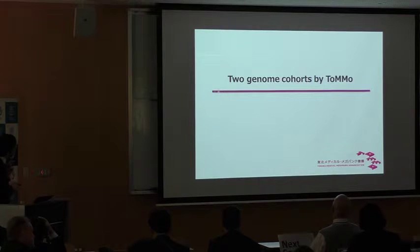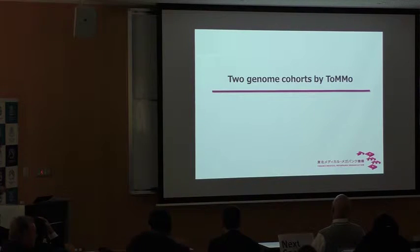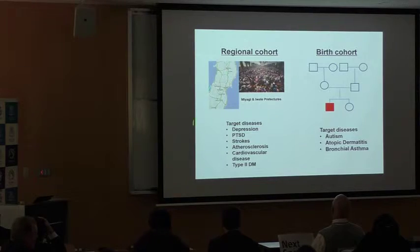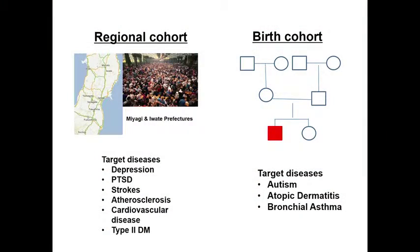Professor Yamamoto introduced two genomic cohorts of ToMo — regional cohorts and birth cohorts. For the regional cohorts, target diseases are depression, PTSD, stroke, atherosclerosis, cardiovascular disease, and type 2 diabetes. For the birth cohorts, target diseases are autism, atopic dermatitis, and bronchial asthma — diseases developed in the early stage of childhood.